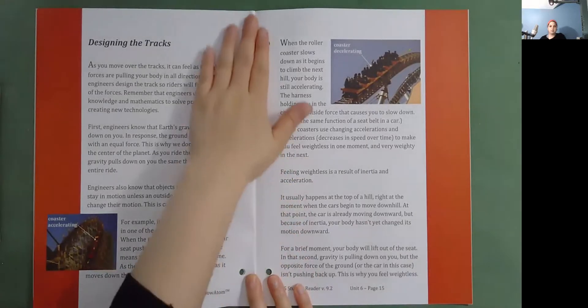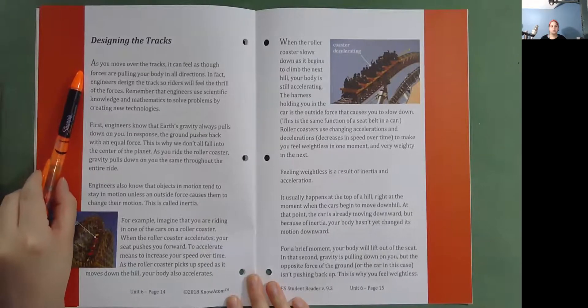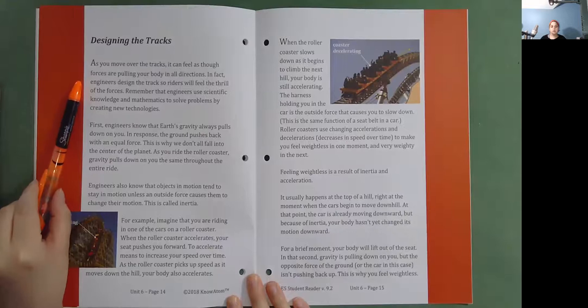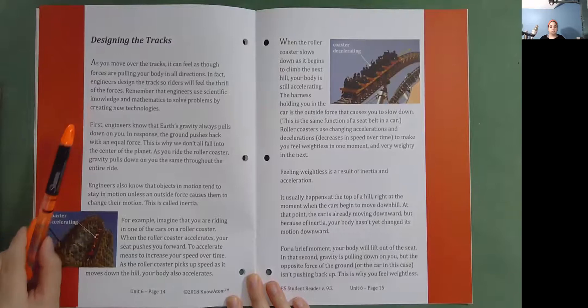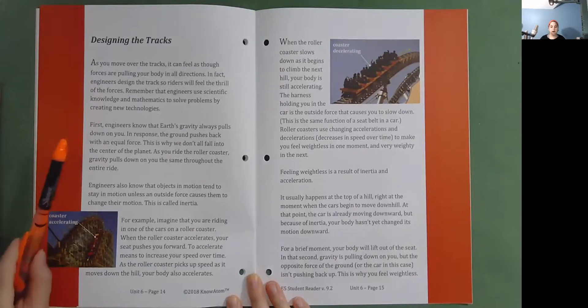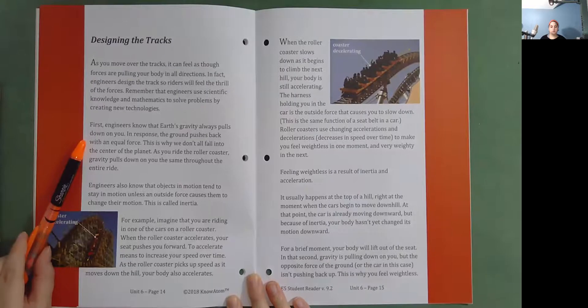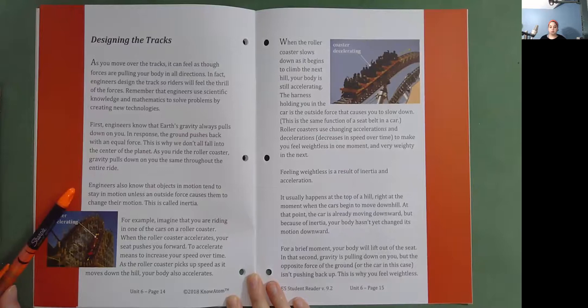Designing the tracks. As you move over the tracks, it can feel as though forces are pulling your body in all directions. In fact, engineers design the track so riders will feel the thrill of the forces. Remember that engineers use scientific knowledge and mathematics to solve problems by creating new technologies. First, engineers know that Earth's gravity always pulls down on you. In response, the ground pushes back with an equal force. This is why we don't all fall into the center of the planet. As you ride the roller coaster, gravity pulls down on you, the same throughout the entire ride. Engineers also know that objects in motion tend to stay in motion unless an outside force causes them to change their motion. This is called inertia.